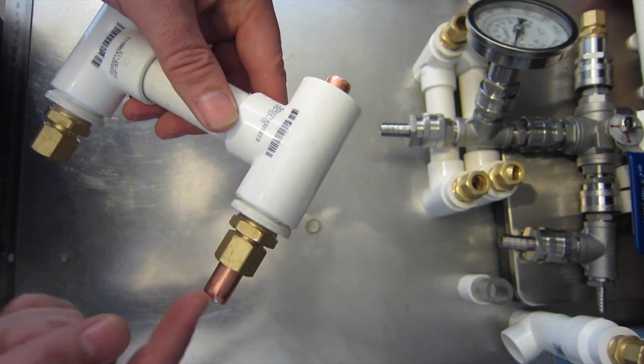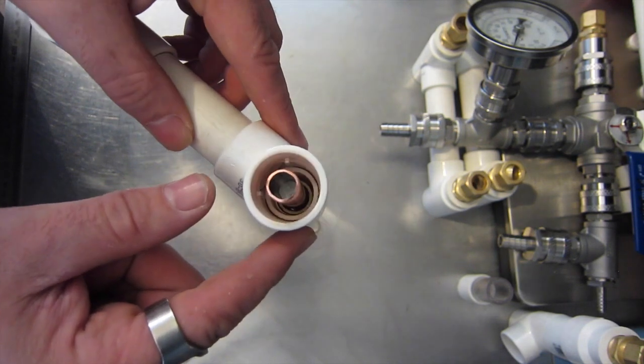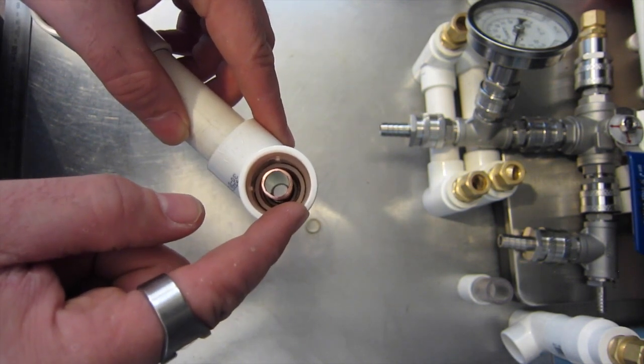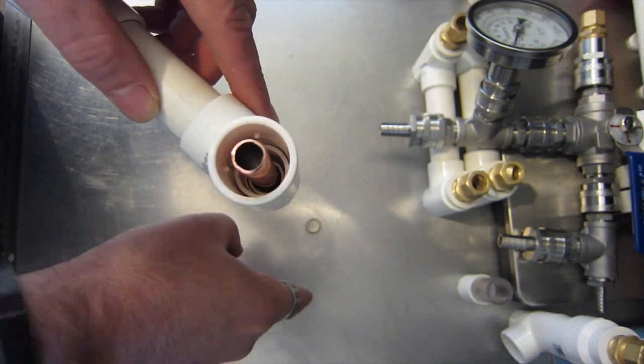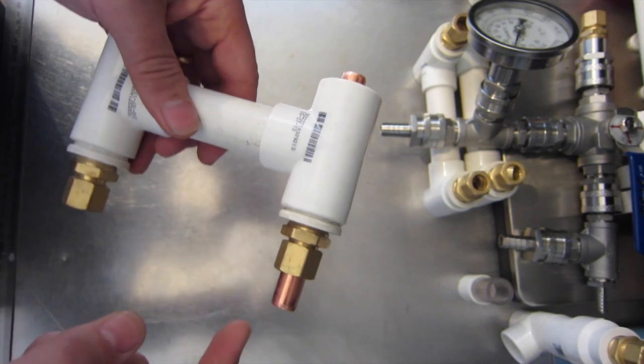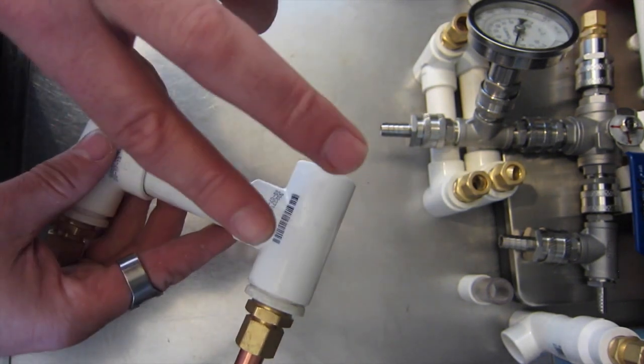The copper pipe has the wort running through it, and in the inside of the tube, the gap between the copper pipe and the inside of the PVC tube is where water will be running in the opposite direction. So cold water running one way and hot, boiling wort running in the opposite direction, and they exchange heat.